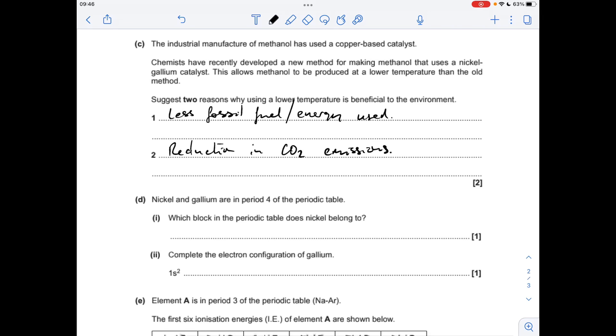Part D now, it's about nickel and gallium, they're both in period 4. Which block of the periodic table does nickel belong to? Well, it's in that transition metal section, so it's in block D. Gallium's got 31 electrons, so the electron configuration is that, and the 4s and 3d could be the other way around if you wanted to.